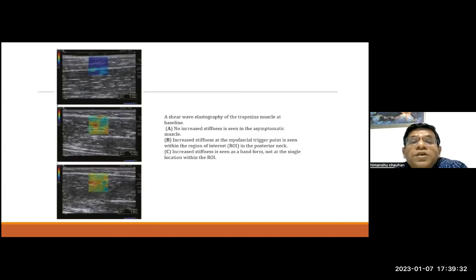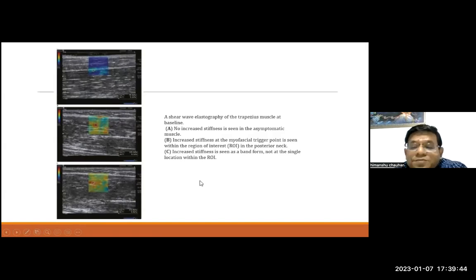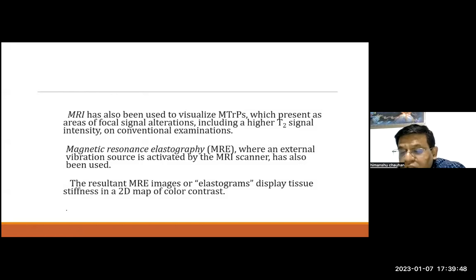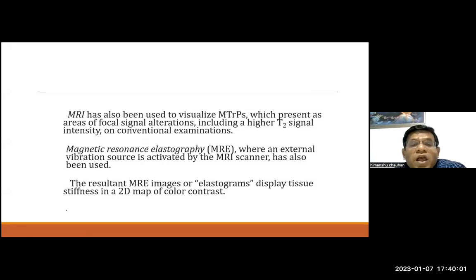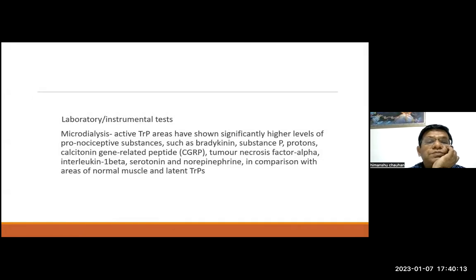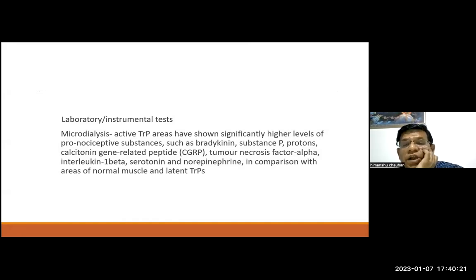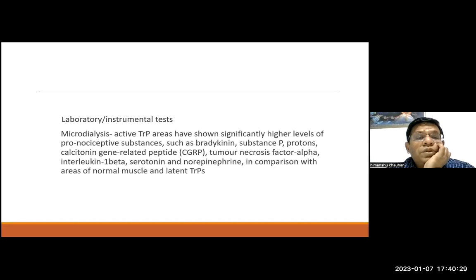Shear wave elastography of normal muscle shows no disturbance, but with a trigger point, color variance disturbance is visible. Ultrasound is a handy mode for finding trigger points, and injections can be performed at the same time. MRI can sometimes identify trigger points with high T2 signal intensity, and MR elastography can display color contrast images. For research purposes, microdialysis at active trigger points may reveal nociceptive substances like substance P, CGRP, and tumor necrosis factor.